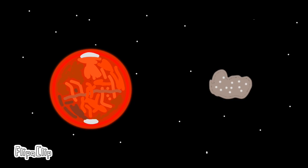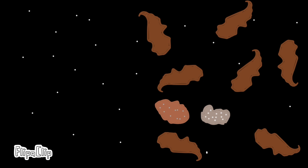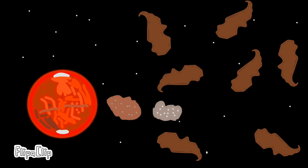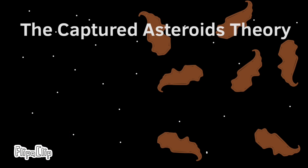All right, so theory number one is that several million years ago, as you and me were just chilling in the asteroid belt, Mars happened to pass by. And his gravitational pull pulled us out of the asteroid belt and into his orbit. And this theory is known as the Captured Asteroids Theory by scientists, and is the most likely one to be true due to our irregular shapes, orbits, and sizes.